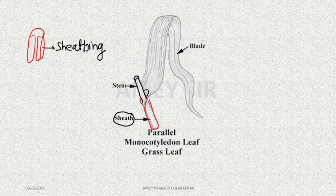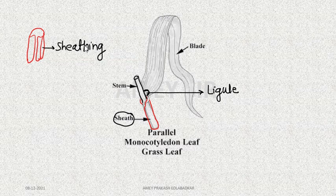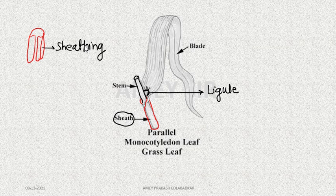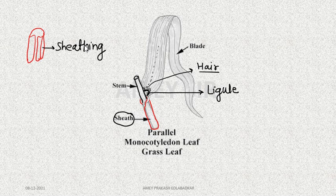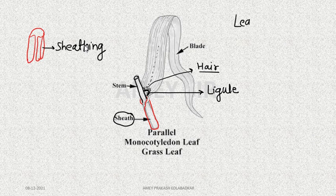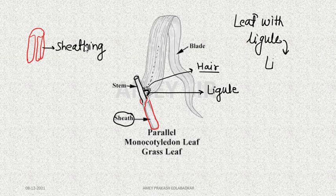Especially in monocots, at the junction of the leaf base and the leaf lamina, there is a small structure called a ligule. This ligule has fine hairs which absorb moisture from the lamina and protect the leaf from decaying. A leaf with a ligule is called a ligulate leaf.